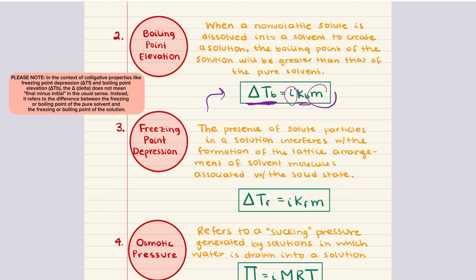Freezing point depression occurs when a non-volatile solute is added to a solvent, lowering the freezing point of the solution relative to that of the pure solvent. This happens because the solute particles interfere with the formation of the solid structure of the solvent, requiring a lower temperature to achieve the phase transition. The freezing point depression can be calculated using: delta T_f equals i times K_f times m, where delta T_f is the change in freezing point, K_f is the freezing point depression constant unique for each solvent, m is molality, and i is the van't Hoff factor.